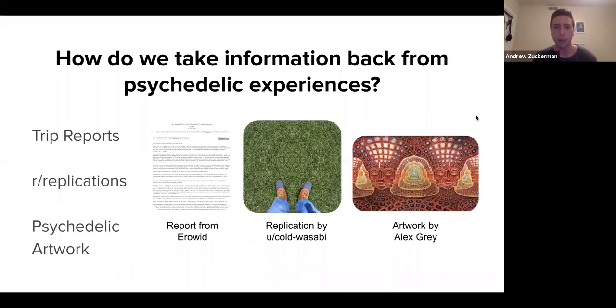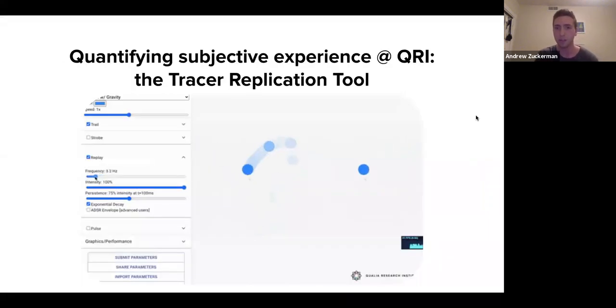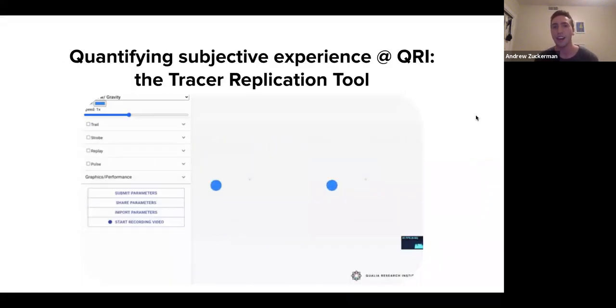So, today, how do we take information back? We do have text in the form of trip reports. We also have replications where people try to recreate some photo or video representation of what their trip was like. And then there's psychedelic artwork, which all these things are awesome already. But we could go even further. And so now I'm going to walk you to the tool we made at QRI. It's the tracer replication tool. This is what it looks like. It sits right now on the internet.